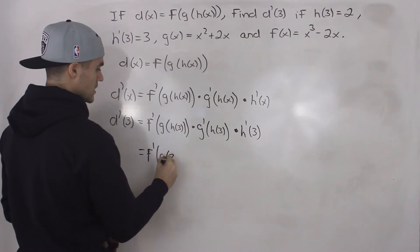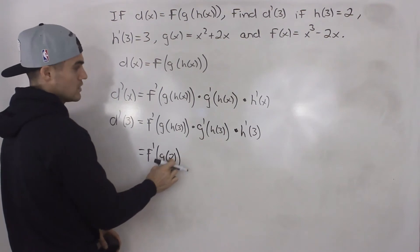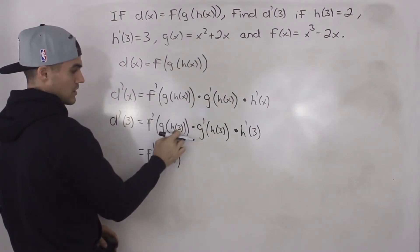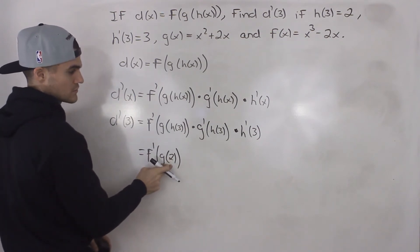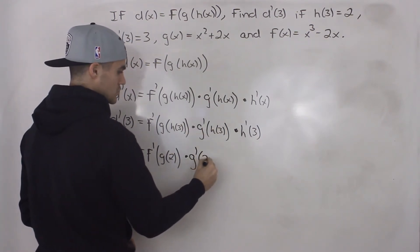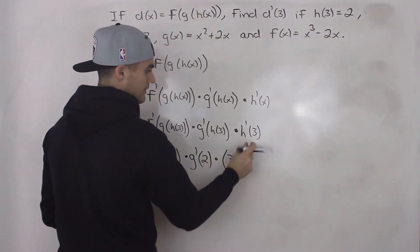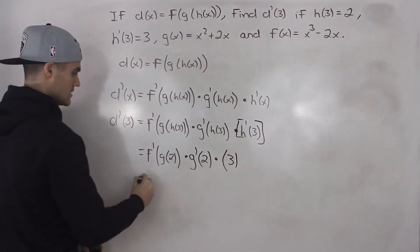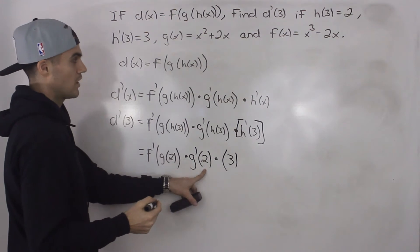So we can just write g of 2 here. Instead of writing g of h of 3, that's going to be 2. So we went from g of h of x to g of h of 3, plugging in x value of 3. And then h of 3 we know is 2. So we can just rewrite that as g of 2 times g prime of h of 3 again is 2 times h prime 3, which is given as 3. So we know that this whole expression is just 3. All right, so we're looking a lot better now. So we have to find what g of 2 is and g prime 2 is.